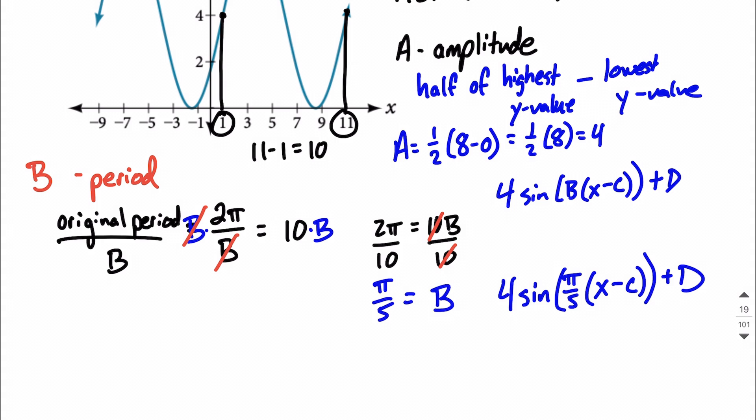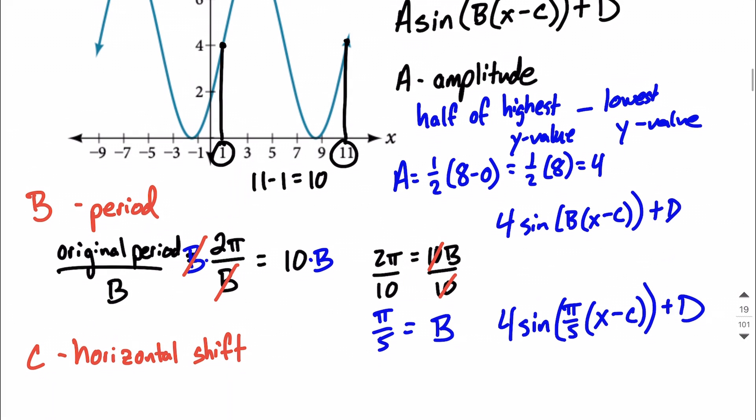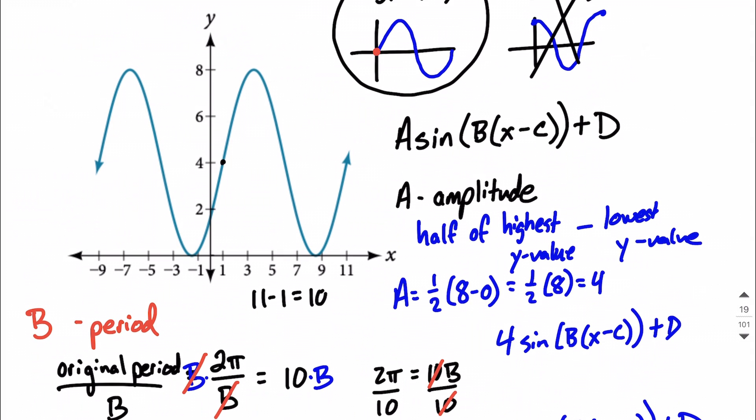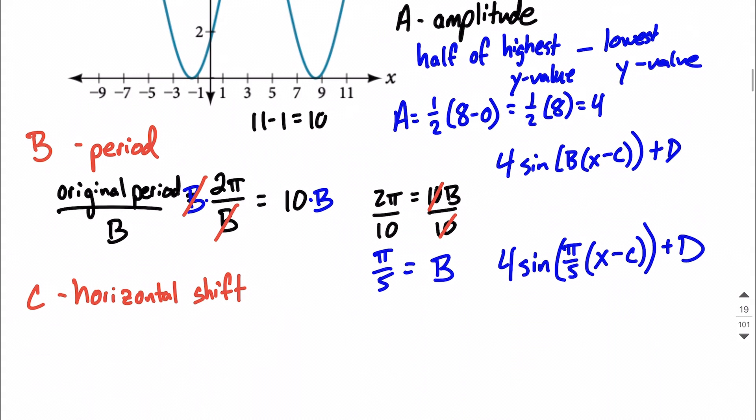Next let's think about C. C is going to represent a horizontal shift. In our case that starting point that we already identified right here, right here in the middle, which was at 1, 4. Let's focus on that because in the original sine graph we would have started at the y-axis, but our starting value has been moved to the right one unit. So because we've moved everything to the right one unit, that's going to tell us that C is going to be 1, positive 1 in our case.